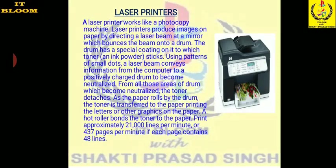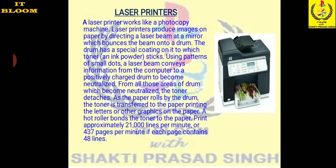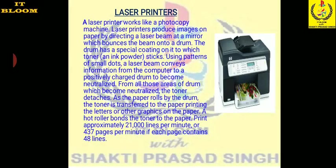Laser printers can print approximately 21,000 lines per minute, or 437 pages per minute if each page contains 48 lines. When printing graphics, it takes more time because more ink is used and the laser light must spread the ink across the paper. For normal pages with 40–48 lines, they can print 437 pages per minute, making laser printers very high quality and fast.